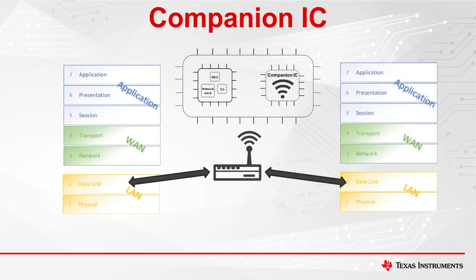This architecture is commonly used when the external host processor is either an MPU running a high-level operating system like Linux, or an MCU running RTOS with sufficient memory to handle all the higher layer protocols. This architecture allows you to easily attach Wi-Fi and/or BLE capability to your processor.